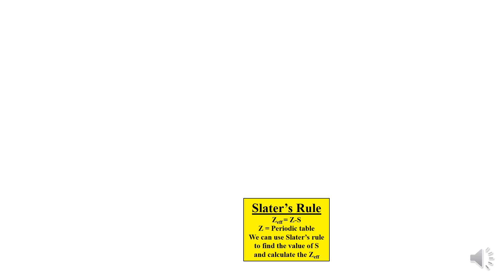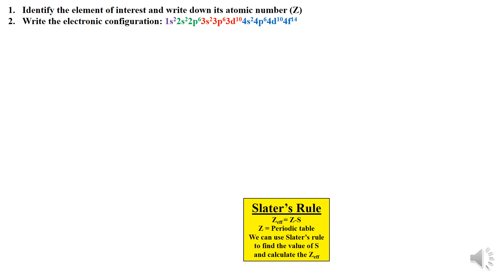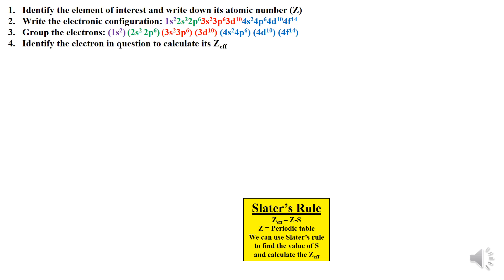I will walk you through in a step-by-step manner. Step 1: Identify the element of interest and write down its atomic number. Step 2: Write the electronic configuration. Step 3: Group the electrons in this particular fashion. Step 4: Identify the electron in question to calculate the Z-effective value. Step 5: Assign the shielding constant values for the S and P, D and F electrons.